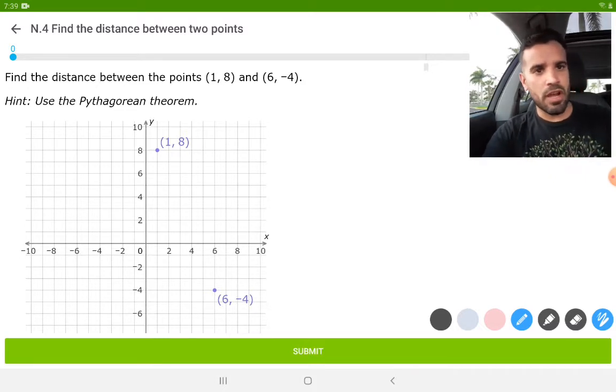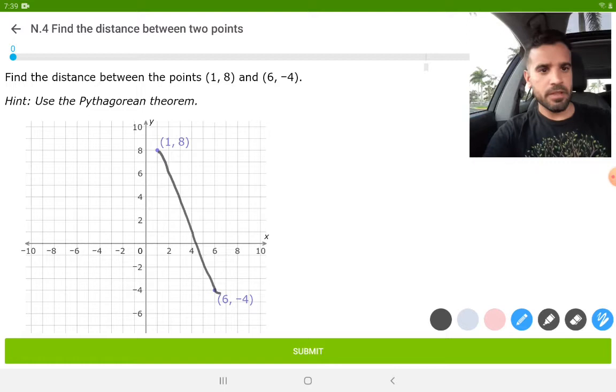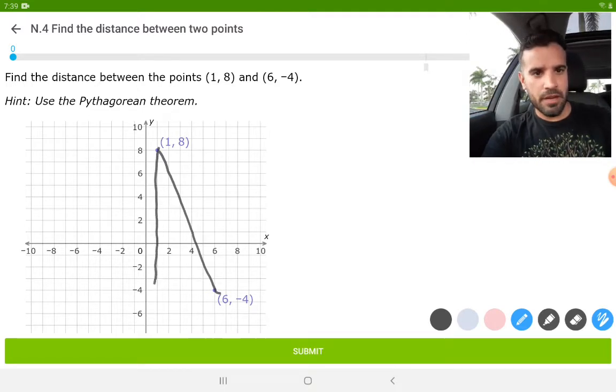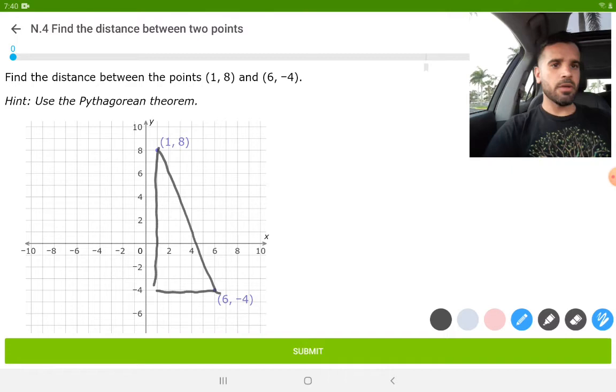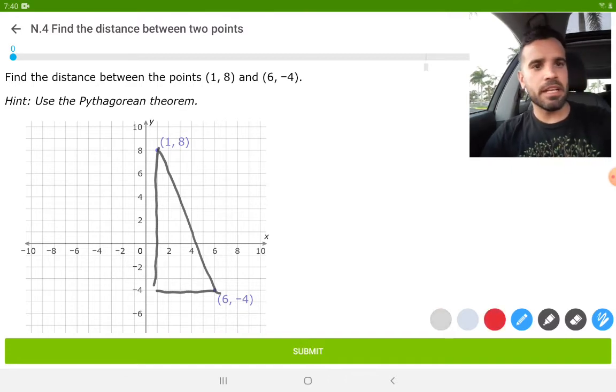The first thing that I would do is draw a line connecting those two points, and then we're going to create a right triangle. We're going to label these points. I'm going to label this one A, this one B, and we're going to create a third point over here, and we're going to label that point C.